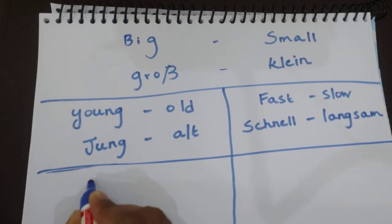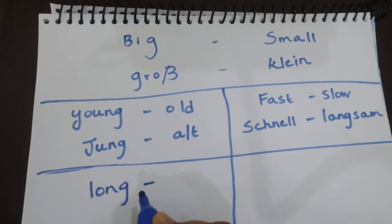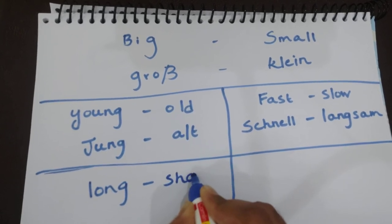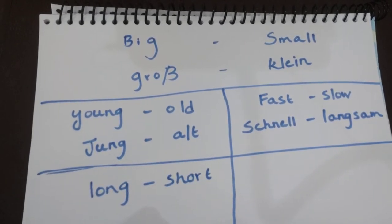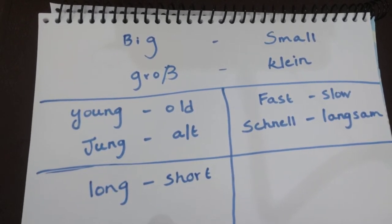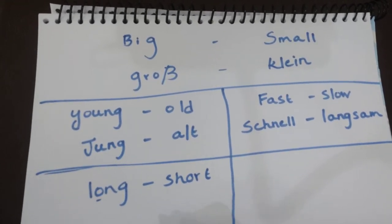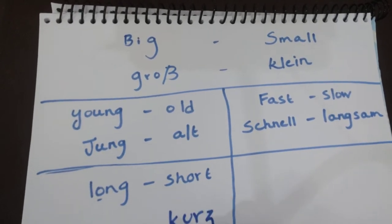And next: long and short. There can be some confusion here. In German, long is 'lang' and short is 'kurz'.